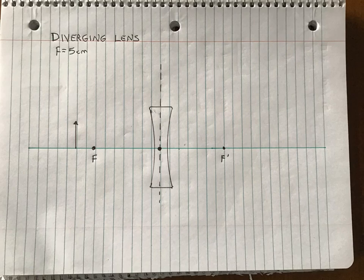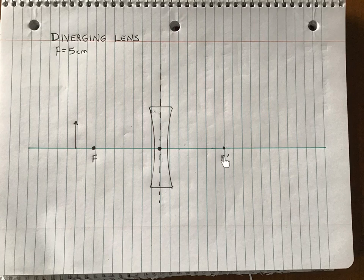A diverging lens has two foci. The main one is on the same side as the object. The secondary focus is over here, same distance away.